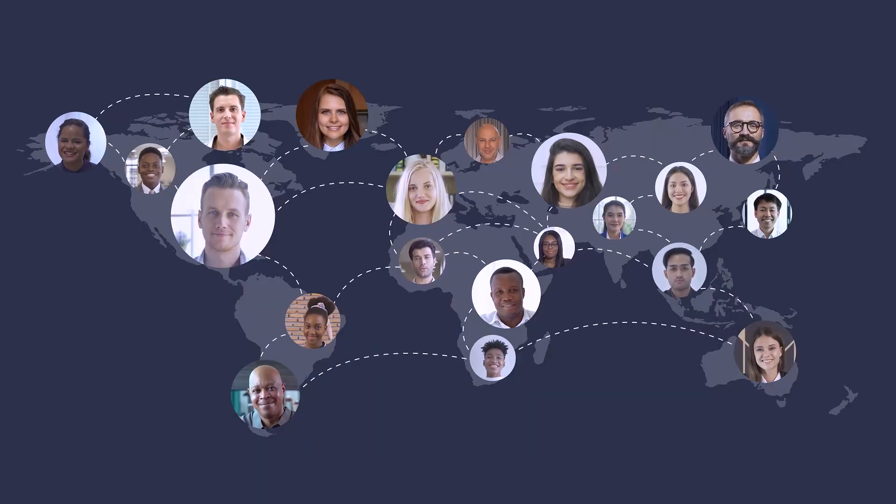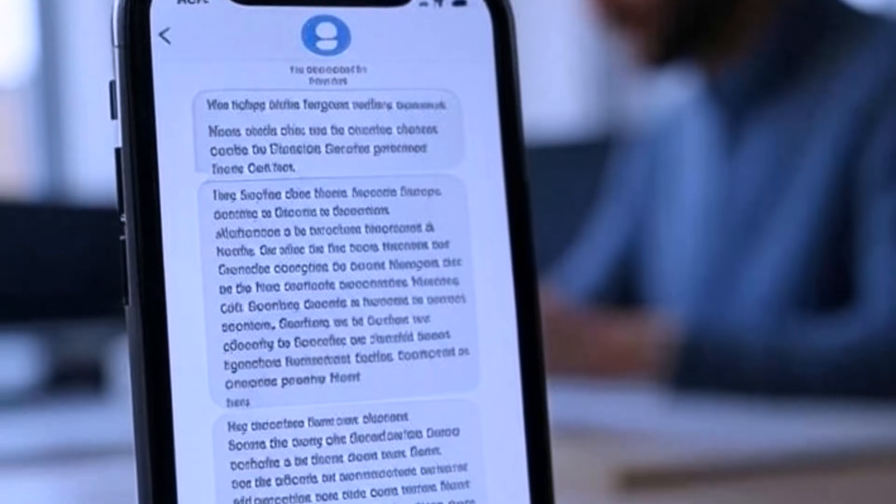Third is back translation, which is brilliant for multilingual models. You translate text to another language and then back, creating a slight variation in the process. For example, an English sentence like 'The weather is beautiful today' can be translated into French and then back to English as 'The weather is magnificent today.' These slight variations create new training examples while preserving the core meaning.